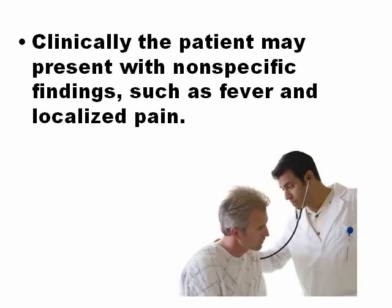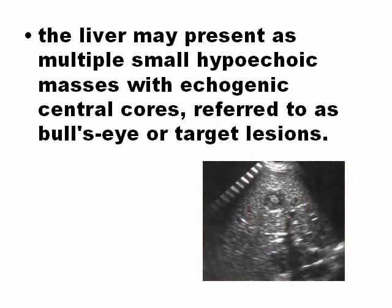Clinically, the patient has fever, pain, and no very obvious signs. The liver in ultrasound shows multiple small hypoechoic masses, and sometimes these lesions can take the shape of a Bull's eye or target lesion — a hypoechoic lesion with a hyperechoic center.